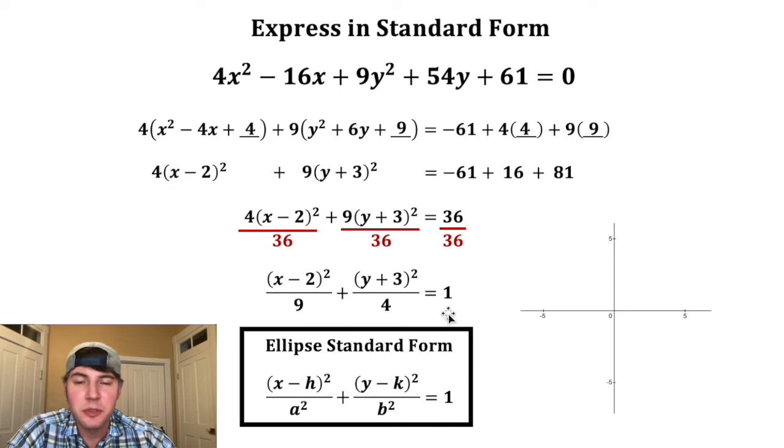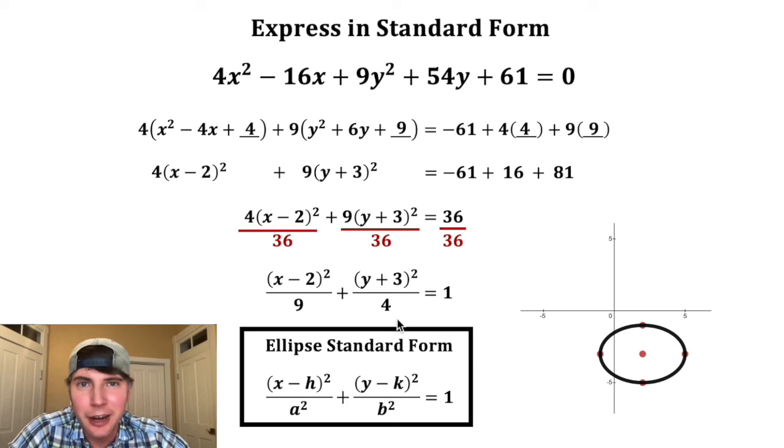So now this is an ellipse with a center at two negative three, with a radius in the x direction of three and a radius in the y direction of two. How exciting.